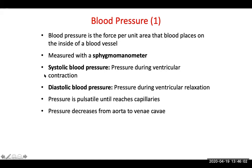We measure blood pressure as a fraction with the systolic blood pressure number on top and the diastolic blood pressure number on the bottom. The top number is the pressure during ventricular contraction — it'll always be the greater number. The bottom number will always be lesser because it's the pressure during ventricular relaxation. Pressure is pulsatile until it reaches the capillaries, due to the constant ejection of blood from the heart, and pressure decreases from the aorta to the vena cava.